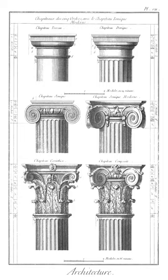Dosseret, or impost block: cubical block of stone above the capitals in a Byzantine church, used to carry the arches and vault, the springing of which had a superficial area greatly in excess of the column which carried them.